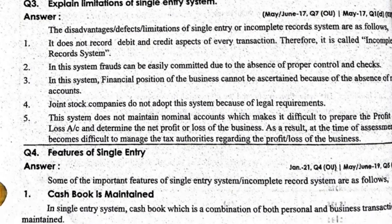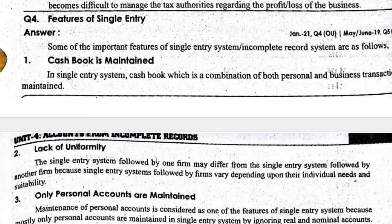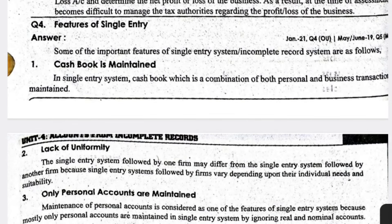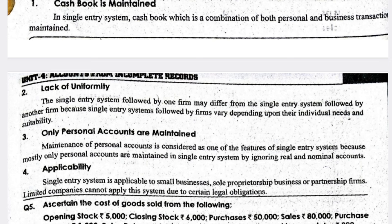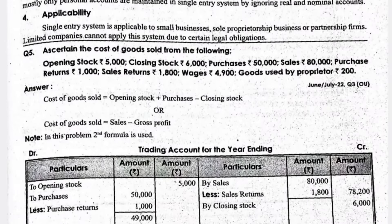The features of single entry system are: first, a cash book is maintained — particularly for both personal as well as business transaction purposes. Second, there is a lack of uniformity, meaning the accounts may differ from other systems. Third, only personal accounts are maintained. Fourth, applicability — this system is only applicable for sole proprietorship, small-scale businesses, and individual businesses.